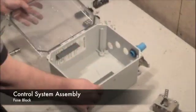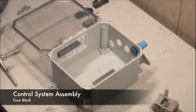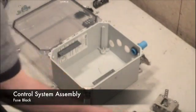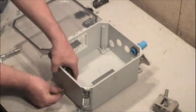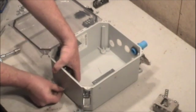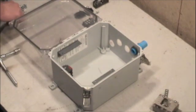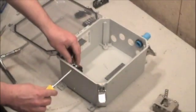We'll begin assembling components in the box with the control circuit fuse block holder. This unit attaches at two pre-drilled locations. Once assembled and tightened, the next component to be installed will be the Curtis PB6 pot box.